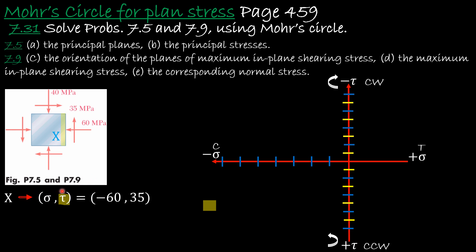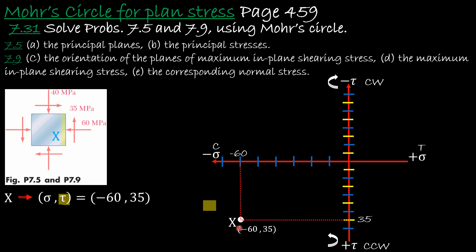Now let's plot this coordinate. We said minus 60, so we go to minus 60 on the normal stress axis. And 35 is positive, so we go to 35 on the shear axis. We draw a line to give us the x-face point. That will be our normal stress in the x-face, and this is our shear stress in the x-face.